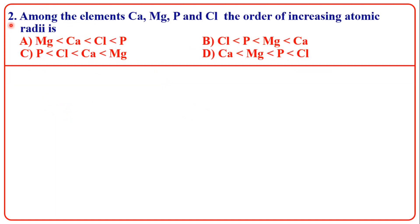Next question. Among the elements calcium, magnesium, phosphorus, and chlorine, the order of increasing atomic radii is — four options, and this option is correct.